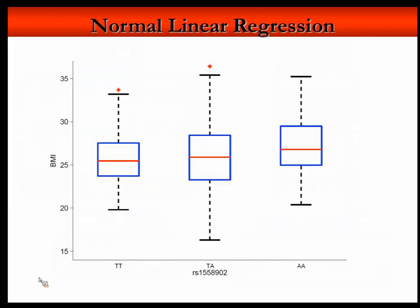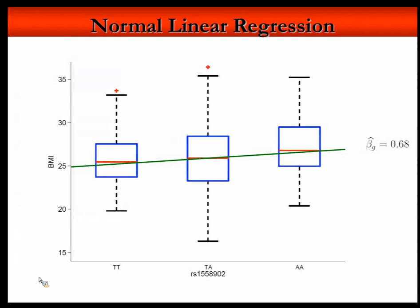Visually, this is done for every polymorphism. Take the example of the FTO gene on chromosome 16 — an intronic polymorphism with the largest ever reported effect on BMI. Every population can be split into three groups: those carrying two A alleles, one A allele, or zero A alleles, and these groups are compared phenotypically. On the y-axis we see the distribution of BMI in the three groups, and we observe a trend of increasing BMI with more A allele copies. A regression line estimates that every copy of an A allele increases BMI by about 0.3 units.